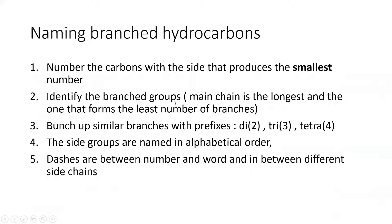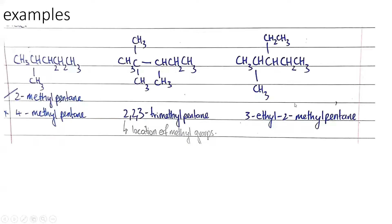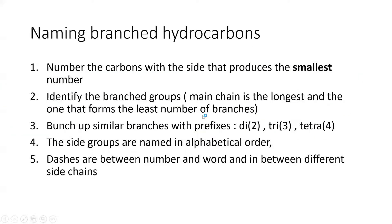So let's move on to naming hydrocarbons. So these are the rules that you need to follow. The first thing you need to do is number the carbons with the side that produces the smallest number. Second thing, identify the branch groups. A trick to this is to find the main chain, which is usually the longest, and forms the least number of branches. So the next thing we have is bunch up similar branches or side chains with prefixes, such as di for 2, tri for 3, tetra for 4. The side groups are named in alphabetical order. If there are different side chains, then they'll be in alphabetical order. And dashes are between number and word, and in between different side chains. Okay, let's look at some examples to understand this better.